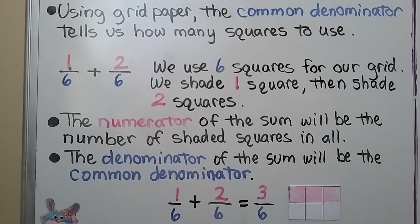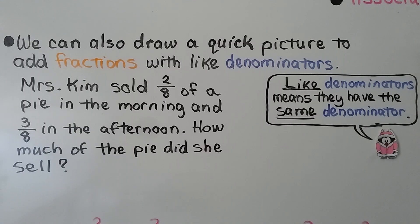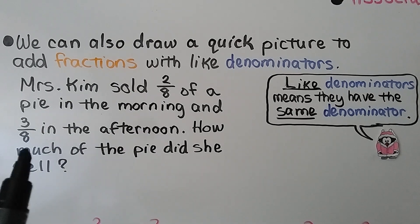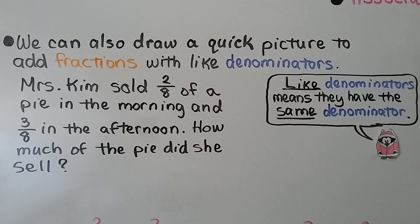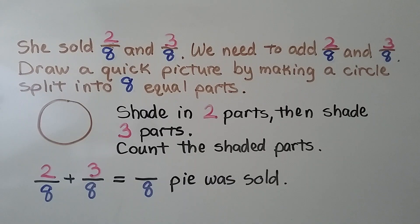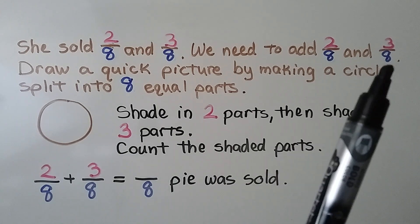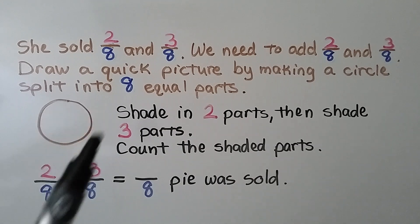We can also draw a quick picture to add fractions with like denominators. Miss Kim sold two-eighths of a pie in the morning and three-eighths in the afternoon. How much of the pie did she sell? They have the same denominator — eight — which are like denominators. We need to add two-eighths and three-eighths.